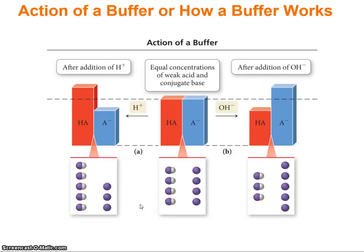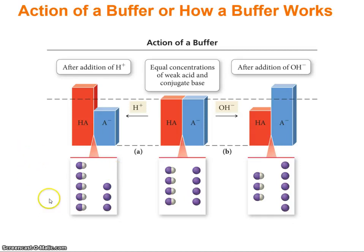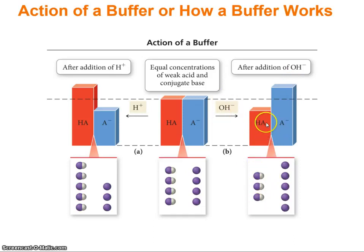If you start with equal concentrations of conjugate acid and conjugate base and add a little H+, you've shifted the ratio but there's still a lot left. If you deplete it all the way down, you don't have a buffer anymore and you'll have to use the full equilibrium ICE table approach. If you add hydroxide, you take away conjugate acid and form more conjugate base. If you add enough to deplete all conjugate acid, you break the buffer and treat it like a strong base problem.